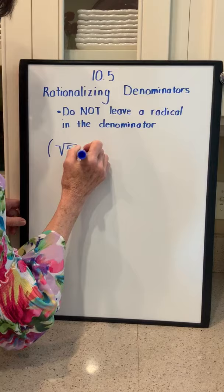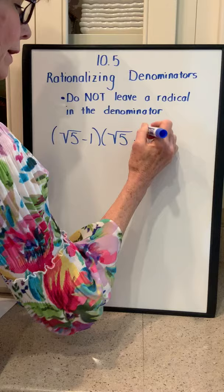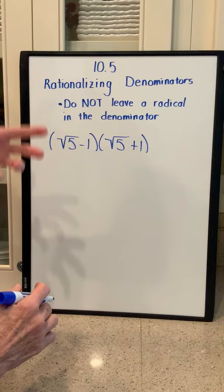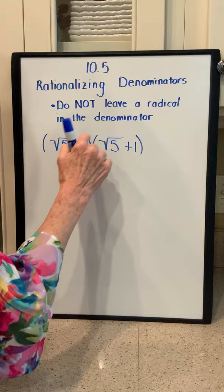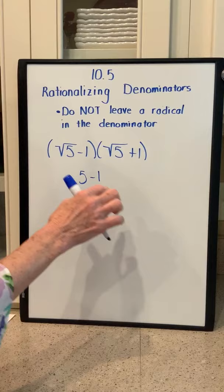If we had the square root of 5 minus 1 times the quantity of the square root of 5 plus 1, if you can do these with a little bit of speed, it would help. You know that the square root of 5 times the square root of 5 is 5. Because this is a plus and this is a minus, the middle two terms are going to equal 0. And then negative 1 times 1 is minus 1, so your answer here is 4.